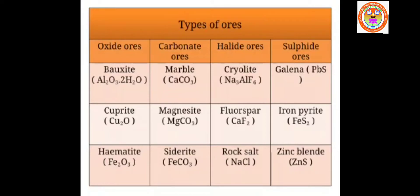These are called oxide ores because the chief metal is present in its oxide form. For example, in bauxite, aluminium is present in its oxide form — aluminium oxide. Similarly, in cuprite, copper is present in its oxide form, and in hematite, iron is present in its oxide form. The element to be extracted is present in its oxide form, so these ores are called oxide ores.